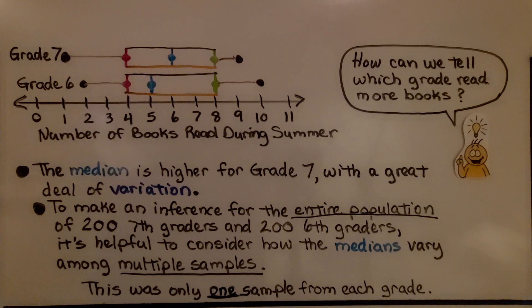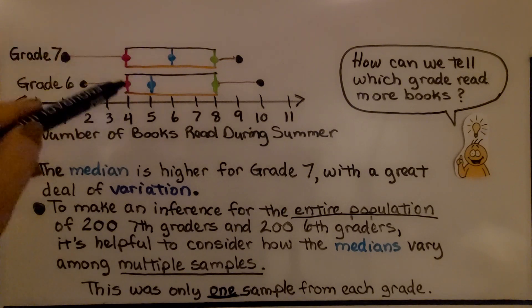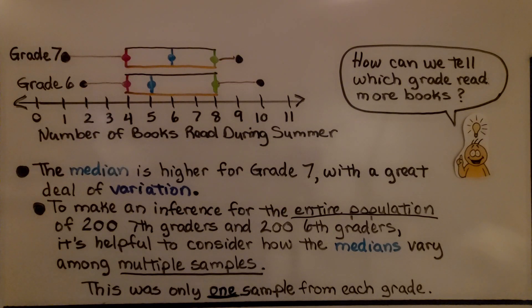The median is higher for grade 7 with a great deal of variation. So this median is 6, this median is only 5. To make an inference for the entire population of 207th graders and 206th graders, it's helpful to consider how the medians vary among multiple samples. This was only one sample from each grade. This was just one sample of 10 students from each grade out of 207th graders and 206th graders.